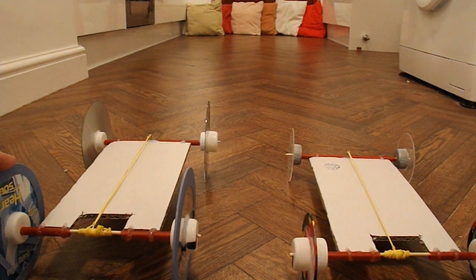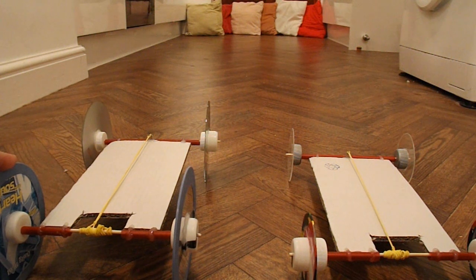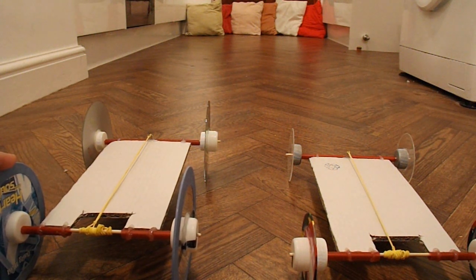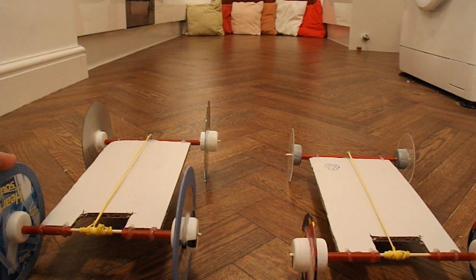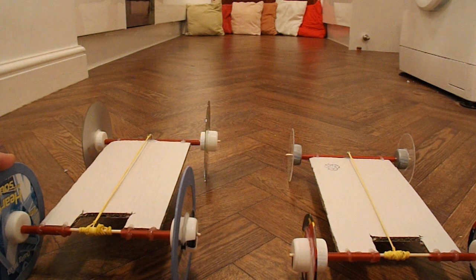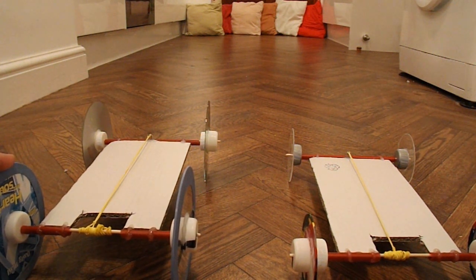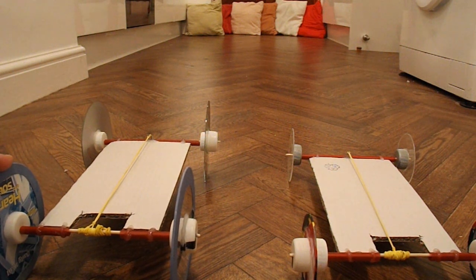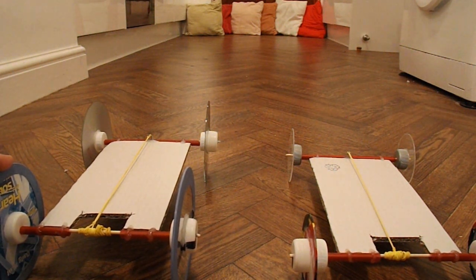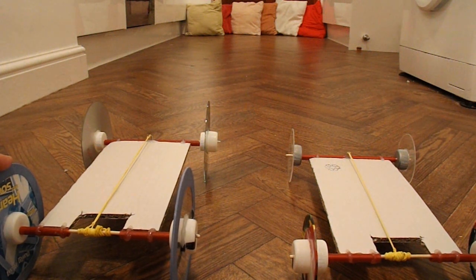This time, the car on the left has got big wheels at the front, big wheels at the back and rubber tires. The car on the right has got small wheels at the front, small wheels at the back and rubber tires. And both of them have got the rubber bands wound up, three rubber bands wound round the back axle. So we'll see how we go.